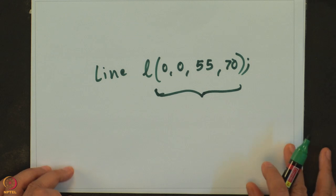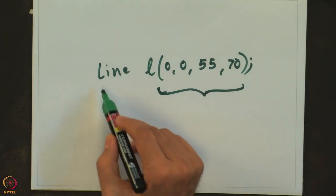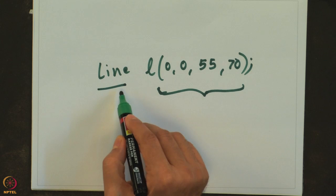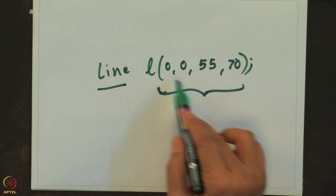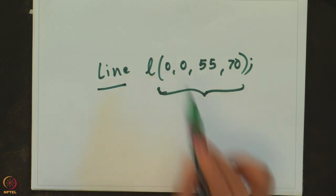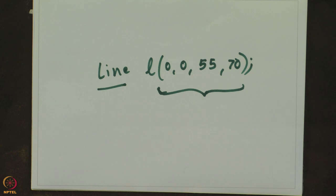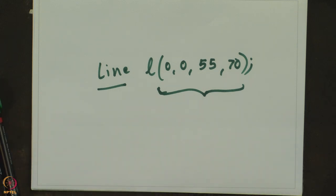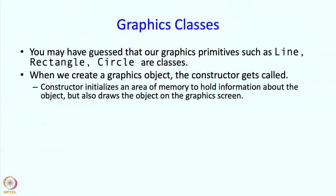So, in our graphics library, there is a class called line, or a struct called line, and there is a constructor which takes 4 arguments. This is really a constructor call and it returns a line object or a line struct. The constructor in this case is going to initialize an area of memory to hold information about the object, which is what normal constructors do — they initialize the members.